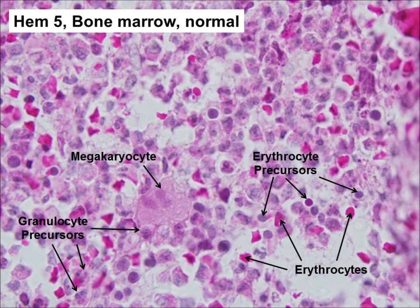Switch to higher power and examine the cellular composition, which is very heterogeneous. Although the preservation is rather poor, try to identify the three lineages of hematopoiesis: the megakaryocytes, which are the large cells with irregular multi-lobed nuclei that produce platelets; the erythroid lineage, which occurs in clusters with dark condensed nuclei and eosinophilic cytoplasm; and the granulocytic lineage, mainly precursors of neutrophils with irregularly shaped nuclei. The key feature here is the diversity of cell types.